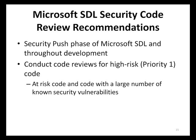Security code reviews should be done on all Priority 1 code, which is code that is most prone to security vulnerabilities. Guidelines on how to classify code by priority are outlined in the Microsoft SDL process guidance paper and the Microsoft SDL book. Any component of code that has experienced a large number of security vulnerabilities in the past is also considered Priority 1 code, as it is more likely that additional security vulnerabilities will be found in code previously having a large number of security vulnerabilities.